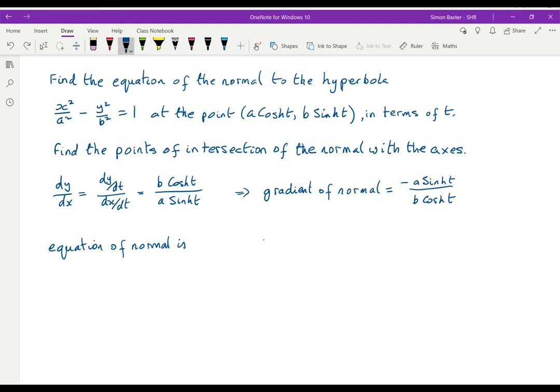And so the equation of the normal is y - y₁, that's y - b sinh t, equals m which is -a sinh t over b cosh t times (x - x₁) which is (x - a cosh t).